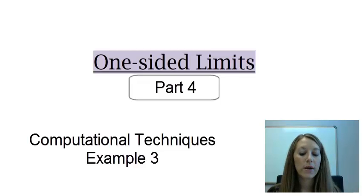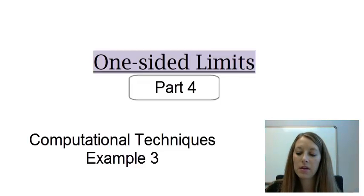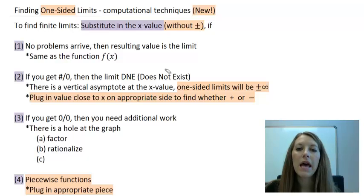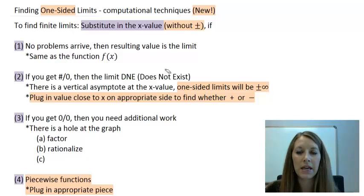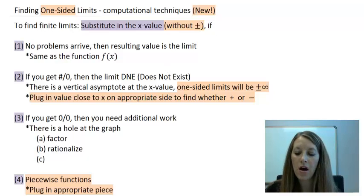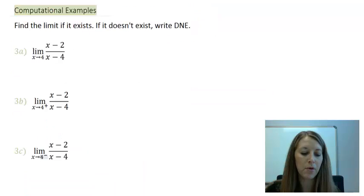We're still focusing on one-sided limits and the computational techniques. These techniques are almost identical to the finite limit section, except anything highlighted in orange represents the new techniques we have to alter for. Let's go ahead and look at our next computational example.